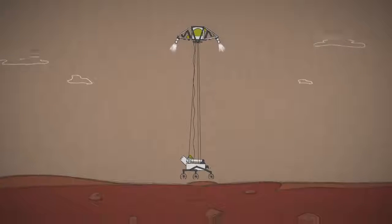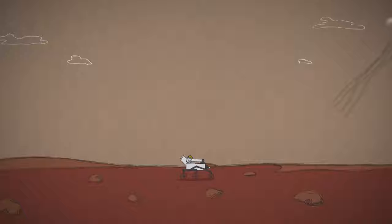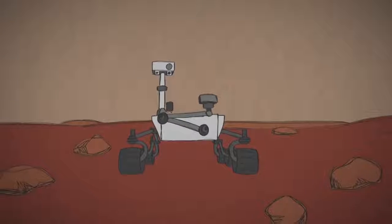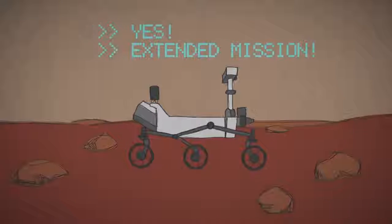When the Curiosity rover got to Mars, its mission was to explore Mars for at least 687 Earth days, one Mars year. But like our other long-lasting rovers, it hit its target and kept on rolling.